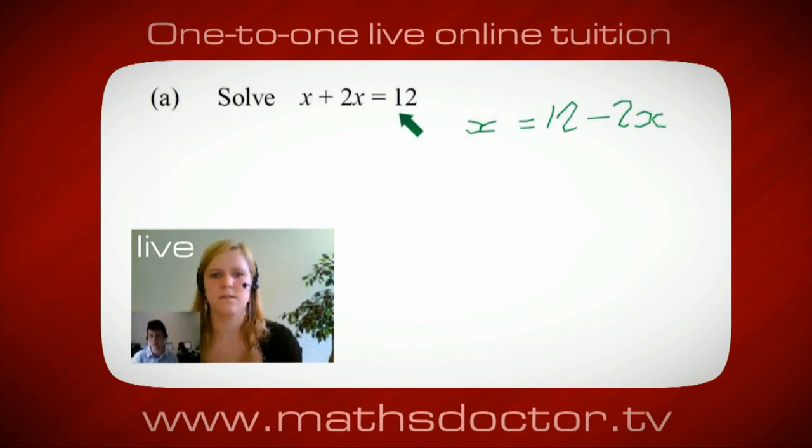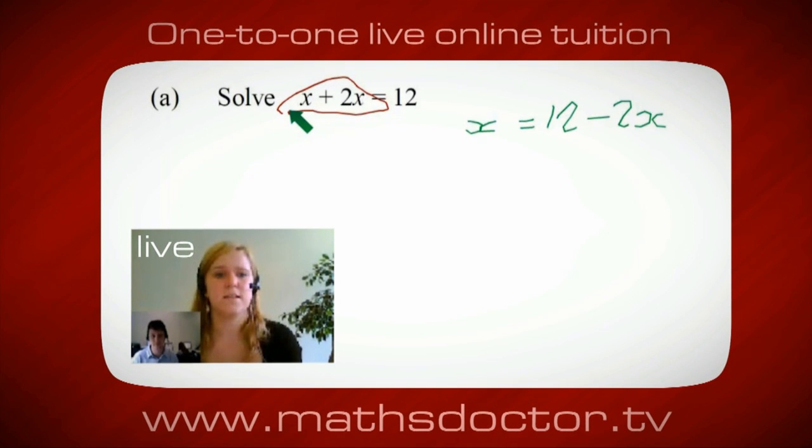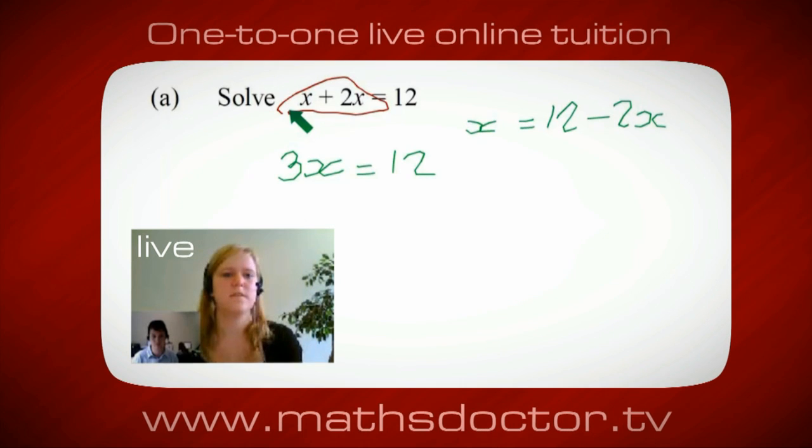OK, so a lot of the time we want to get x by itself, but what we want to do first is get all of these x's together. So can you see anything we can do with this? Get all these together in one place. Oh, OK, it's 3x, isn't it? Yeah, absolutely. So 3x equals 12. Oh, and so x equals 4. Brilliant, spot on, well done.